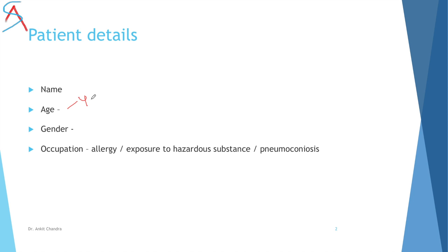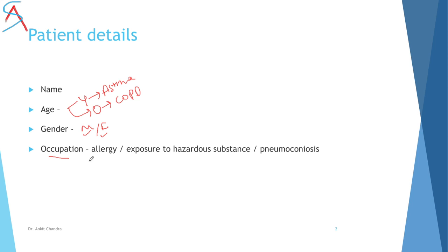Age is important because certain diseases like asthma are common in young age, while COPD is common in old age. Gender matters because certain diseases are more common in males, others in females — including genetic disorders and certain carcinomas. Then we will ask about occupation, which is very important.